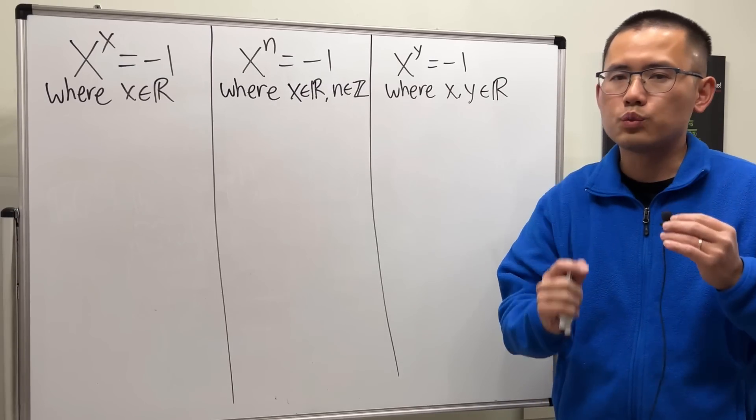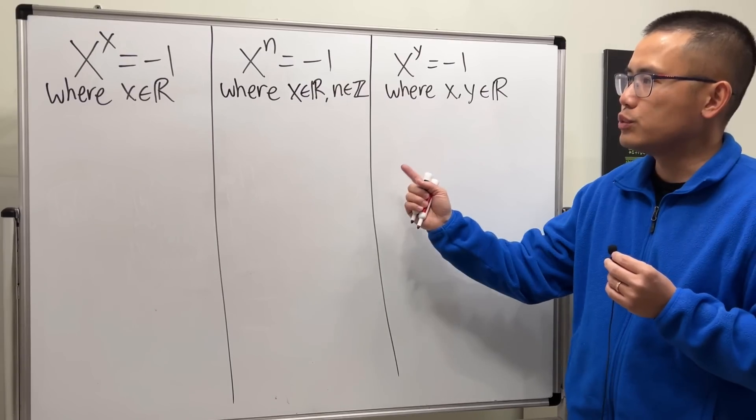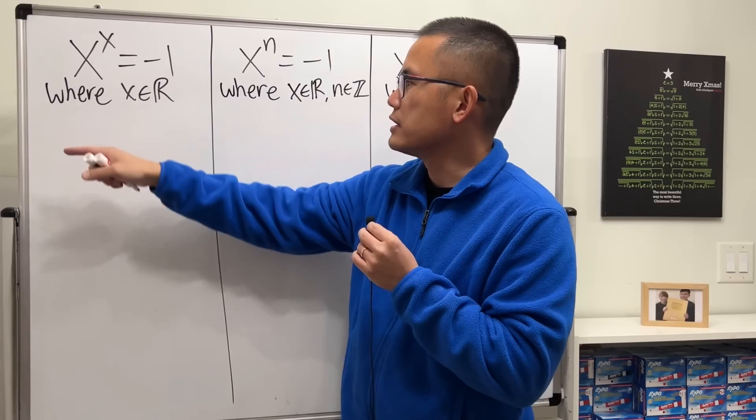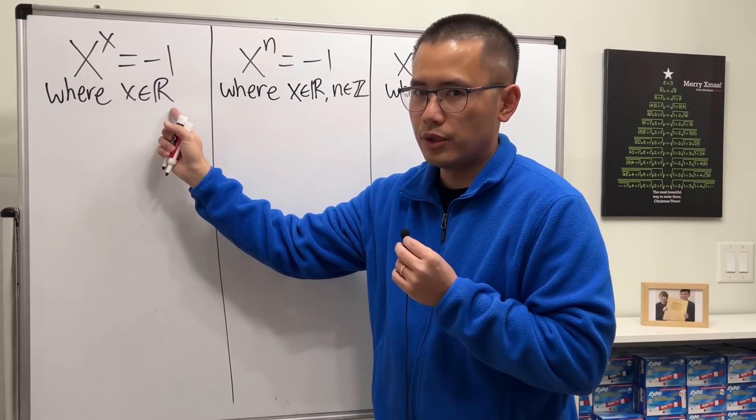Today, let's talk about what to the what will give us negative 1, and I have these three cases for you. The first one is the base and the exponent are the same, and x right here is the real number.